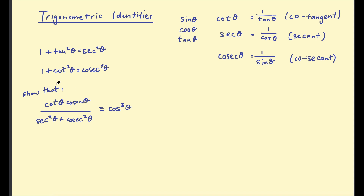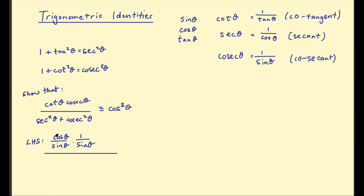Start with the messier side — the left hand side — and break it down into sine and cosine. Cot is cosine over sine, and this is multiplied by cosecant which is 1 over sin θ, divided by sec squared which is 1 over cos²θ, plus cosec squared which is 1 over sin²θ.